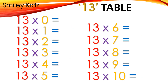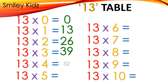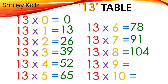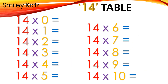Table 13: 13×0=0, 13×1=13, 13×2=26, 13×3=39, 13×4=52, 13×5=65, 13×6=78, 13×7=91, 13×8=104, 13×9=117, 13×10=130.